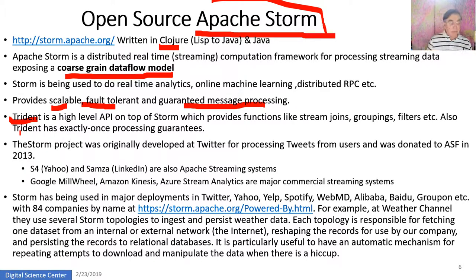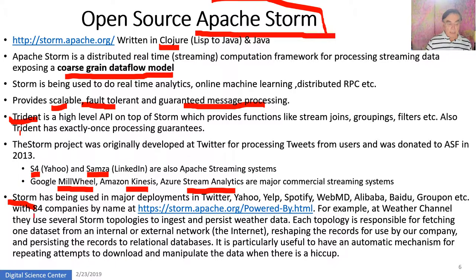There are other open source systems: S4 from Yahoo and Samza from LinkedIn, which have similar problems to Twitter in the real world, and they're also Apache open source. There are commercial systems too: Millwheel from Google, Kinesis from Amazon, and Stream Analytics from Microsoft. Like Storm, it's being used by 84 companies including Alibaba, Baidu, Groupon, Yahoo, Yelp, Spotify, and others. The Weather Channel uses Storm to process weather data with different Storm topologies — collections of processing units that process particular data sets.